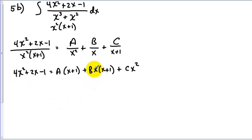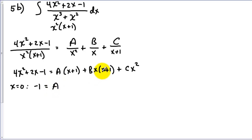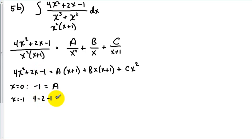We can pick x equals 0 — that'll make both B and C terms cancel out because we've got zeros there. So we get negative 1 equals 0 plus 1 times A, giving us A equals negative 1. Now let's pick x equals negative 1 — that causes both A and B terms to cancel out. We have 4 times negative 1 squared equals 4, and 2 times negative 1 minus 1. The negative 1 makes A disappear and B disappear, and negative 1 squared is positive 1. So we get C equals 1.